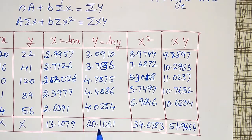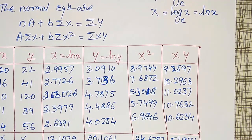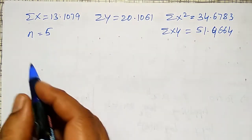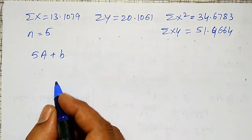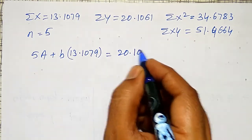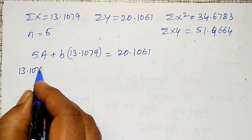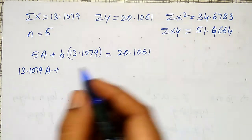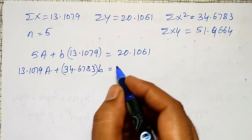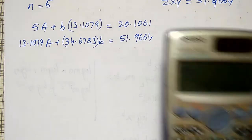Using these summations in the normal equations: first equation is 5A + 13.1079b = 20.1061, and second equation is 13.1079A + 34.6783b = 51.9664. I need to solve these two simultaneous equations for capital A and small b.